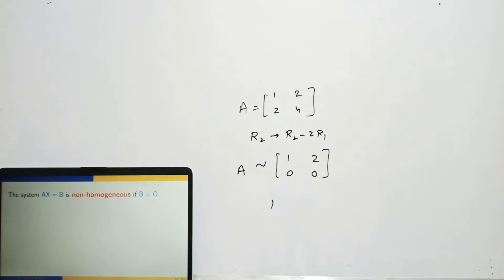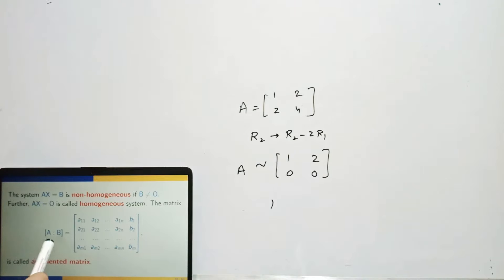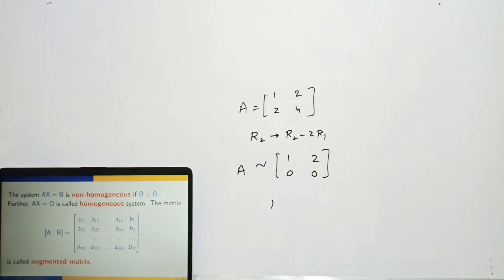The system is non-homogeneous if b is a non-null matrix, and homogeneous if b = 0. One more definition: the augmented matrix [A|B] is formed by adding the column of B to the matrix A. We write the two matrices side by side — this augmented matrix is very useful for solving the system.